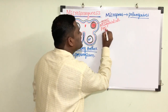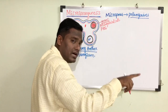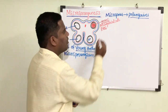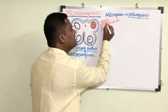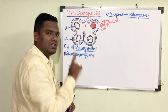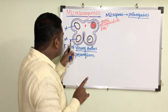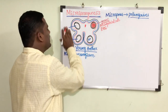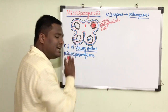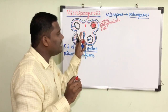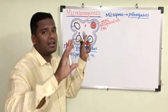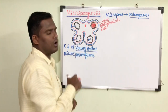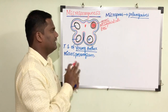All three terms — microspore mother cell, archesporial cell, and pollen mother cell — refer to the same cells present in the microsporangia. There are four microsporangia in each corner of the anther.